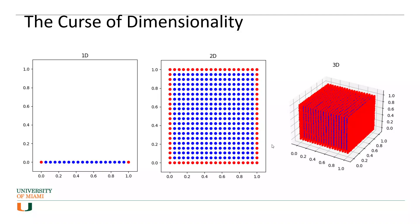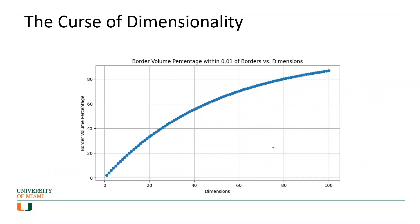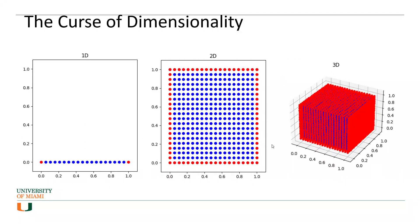Why is it that when we increase the number of dimensions, the probability of finding an outlier increases? Think about looking at students in a class on only one dimension — you may not be able to find an extremist. However, if you start drilling down and look at various dimensions of the students' personalities, you would be able to find some outliers and extremists. How many students add too much sugar to their coffee? How many watch too much TV or play too many video games?